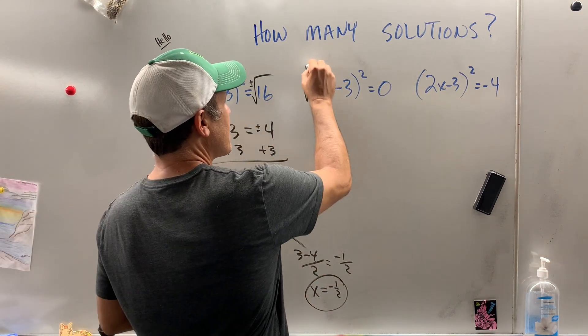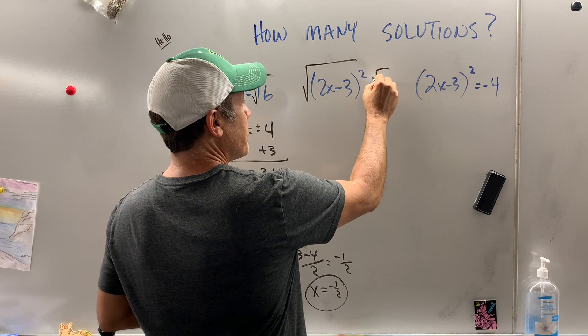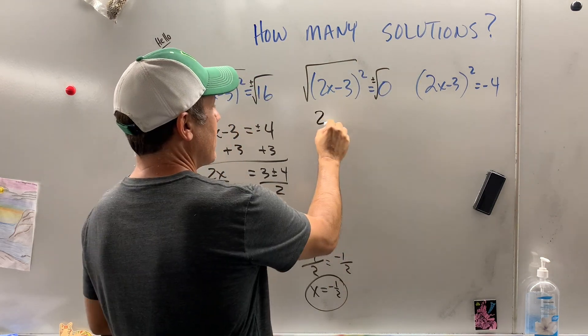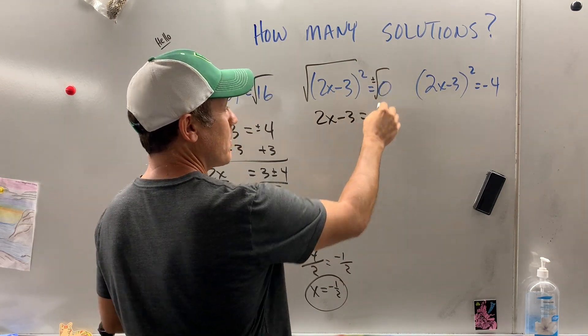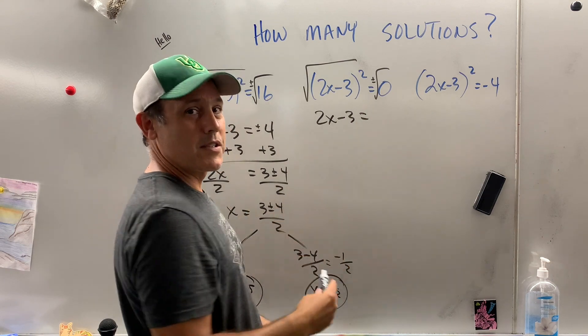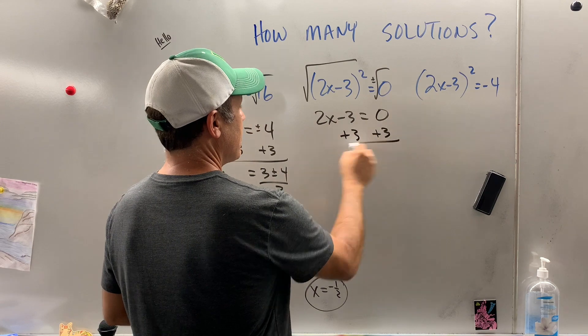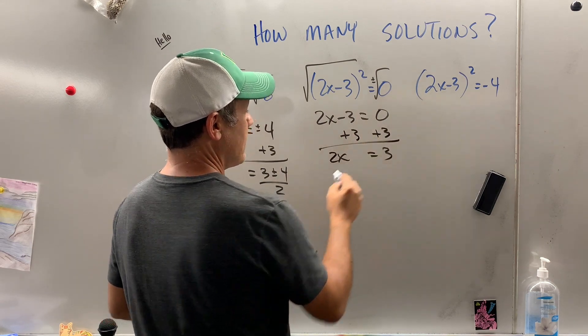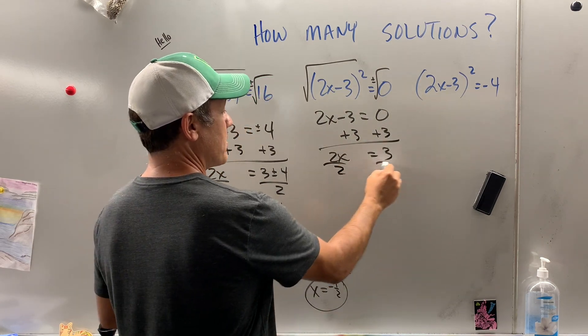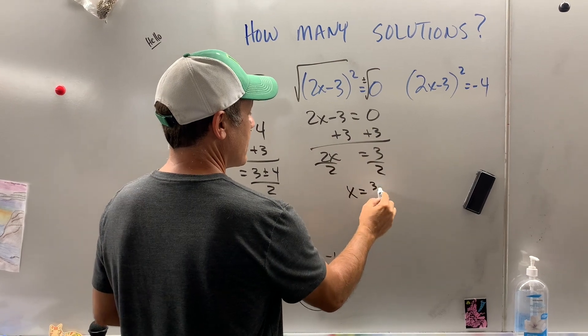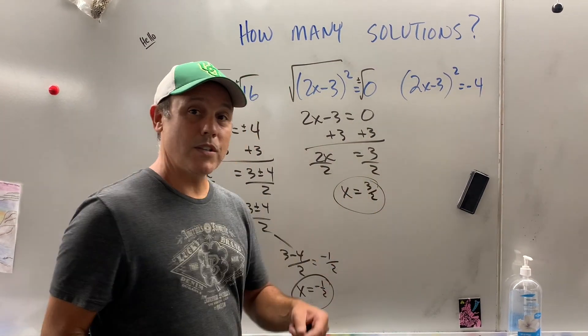How about here? When I take the square root of that, again, plus or minus. I have 2x minus 3 equals, well, the square root of 0 is 0, and there's no such thing as plus or minus 0. So it's just 0. Now we add 3 to both sides. We get 2x equals 3. Divide both sides by 2. x equals 3 over 2. How many solutions? 1.